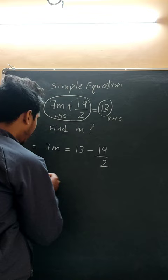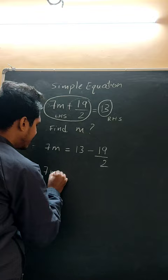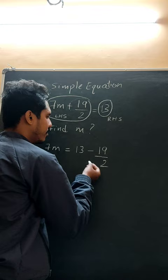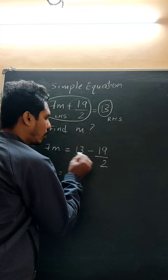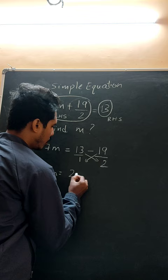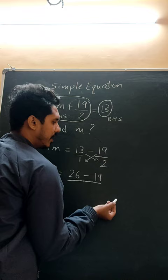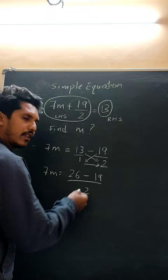Next step: 7m stays as it is. Now we use the cross multiplication technique. 13 is actually 13 divided by 1. Multiply the diagonal terms: 13 times 2 is 26, minus 19 times 1 is 19. The denominator: 1 times 2 is 2. So we get 7m equals 26 minus 19 over 2, which is 7 divided by 2.